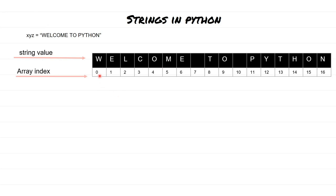Index always begins with zero and then increments by one. So the first letter you have typed is going to have an index of zero. For example, 'welcome to python' internally is going to look like an array with index beginning at zero and ending at index 16. After 'welcome' we have a space, and even a space is going to occupy a position in the array — the seventh position of the array is actually a space.